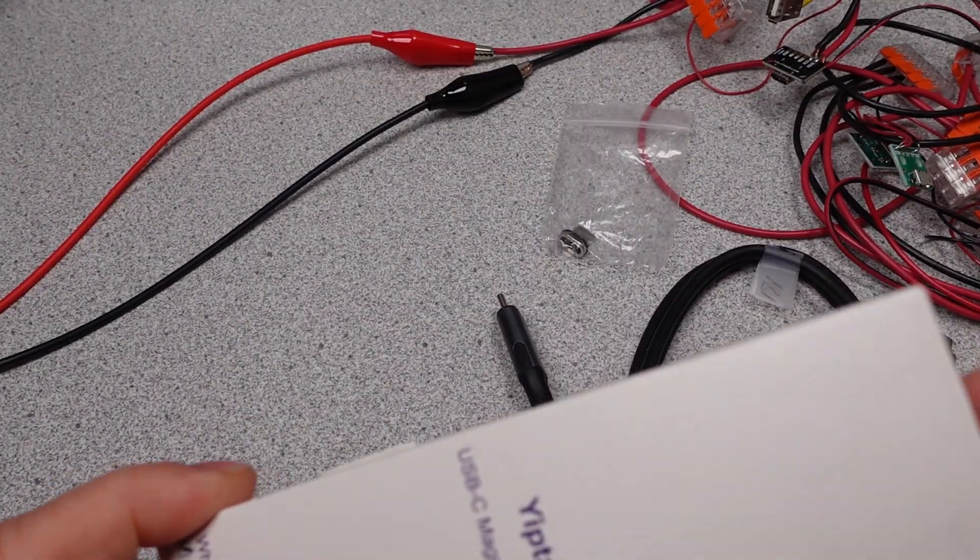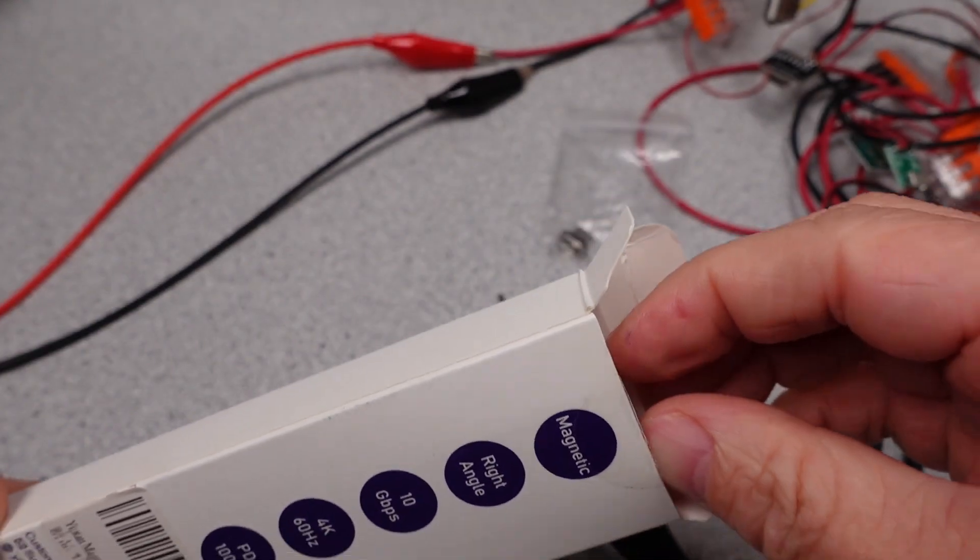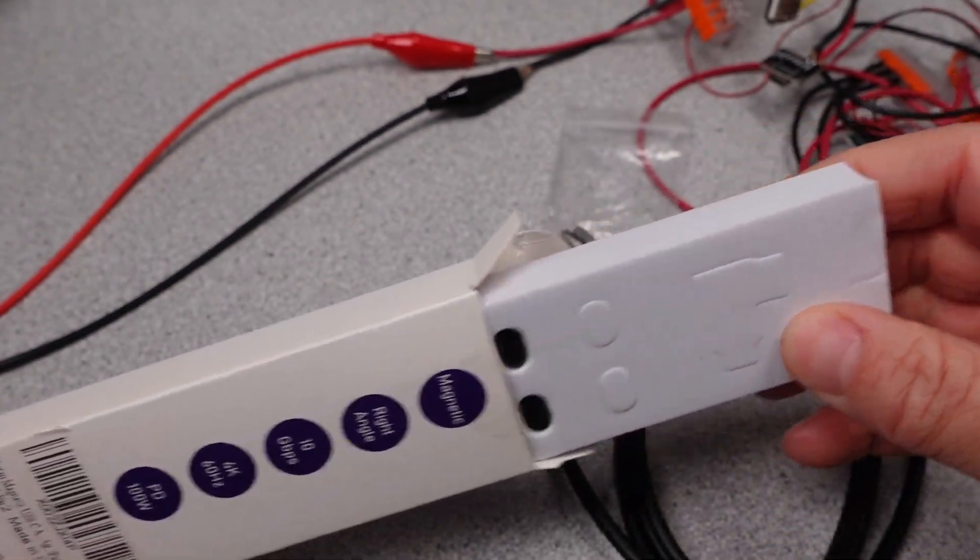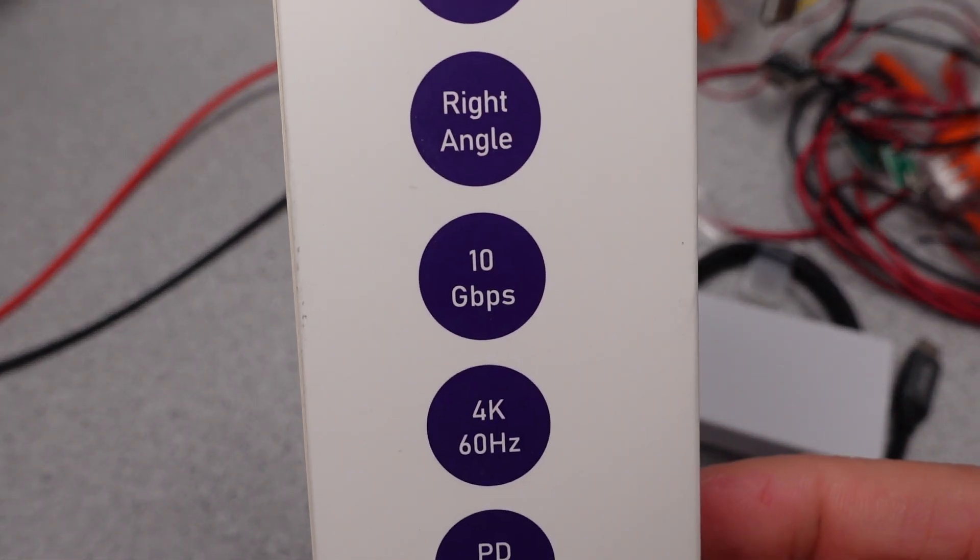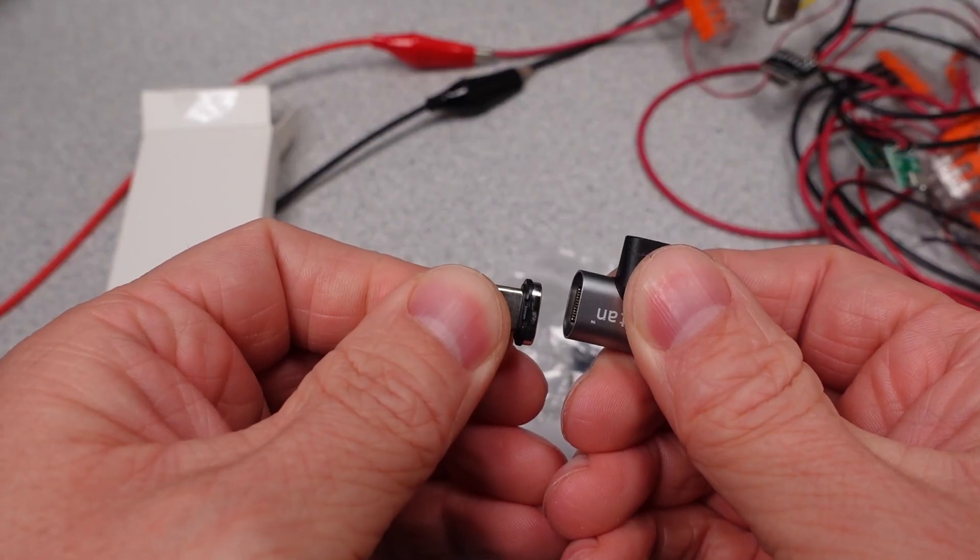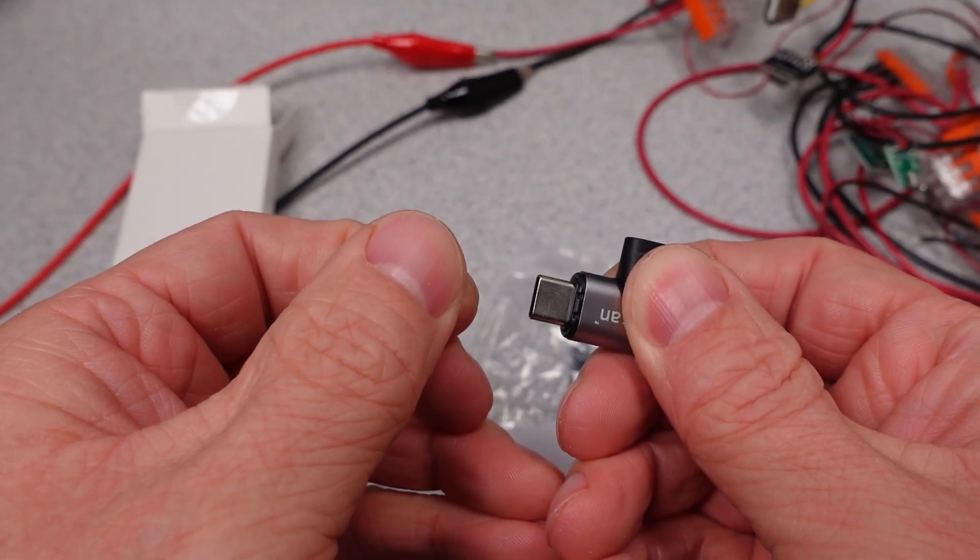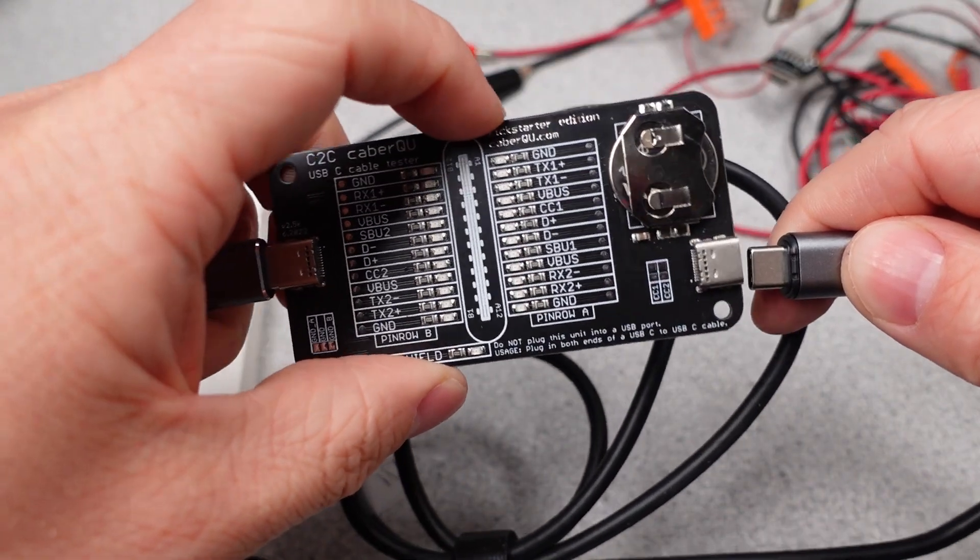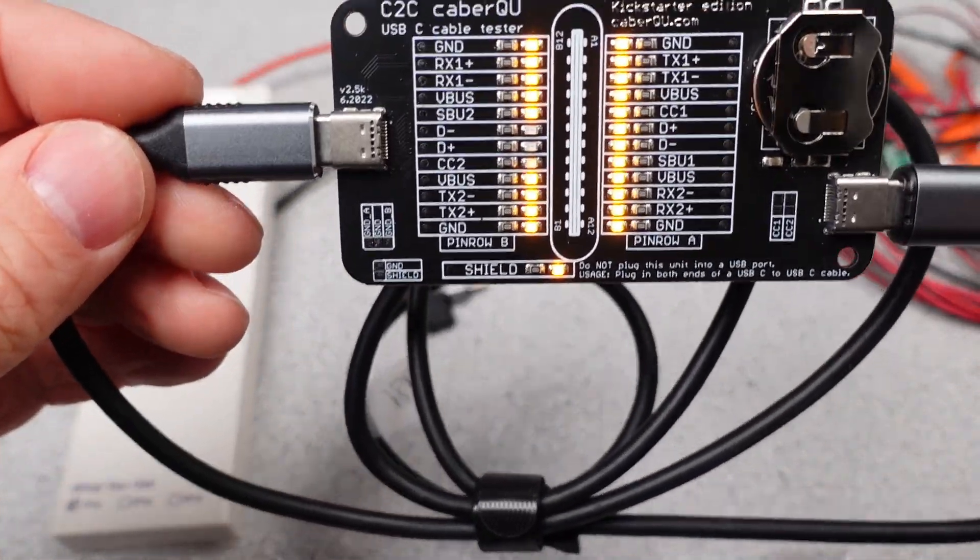The Yiptan magnetic tip adapters and cables have something I haven't seen yet. These pass high-speed data and 100 watt power. It is like you don't have to lose anything to transfer information and power with that magnetic tip. I might actually make use of this adapter, if nothing else, to save my USB-C port from wear and tear. So, how does this do, resistance-wise? Well, the adapter adds about 50 milliohms total, so about 1 watt of loss at 100 watts, which is really not bad at all.